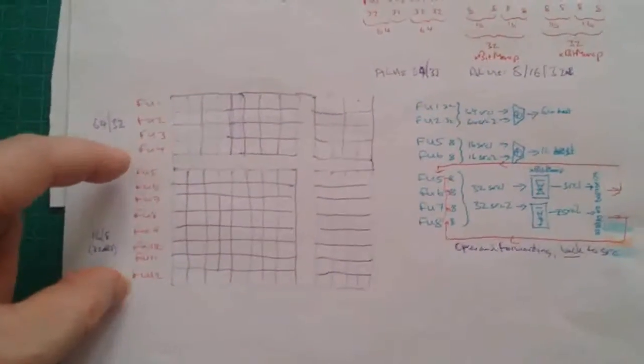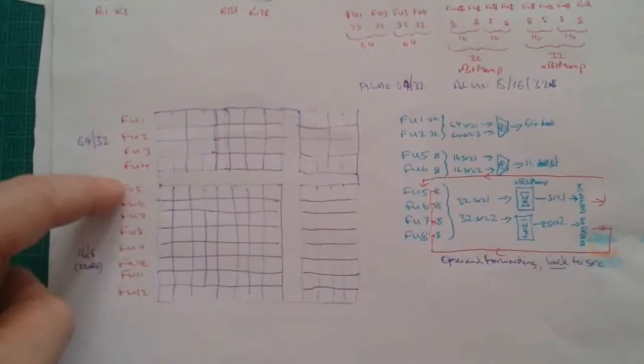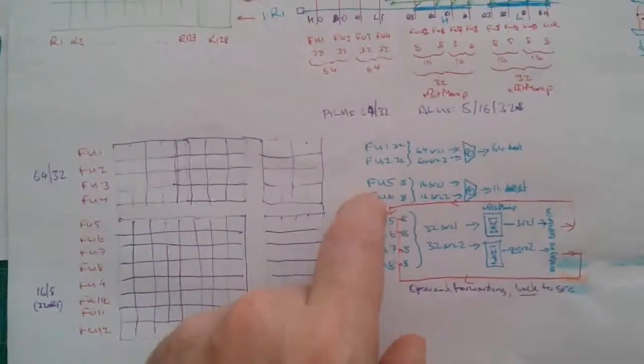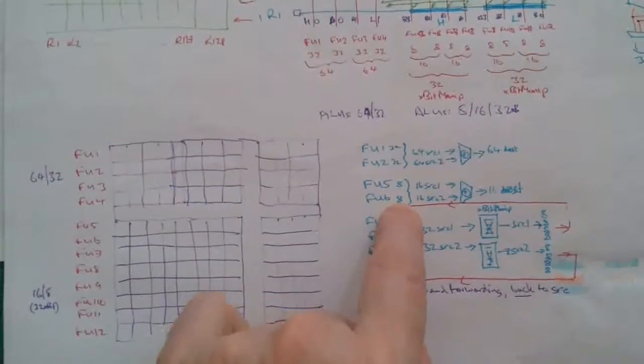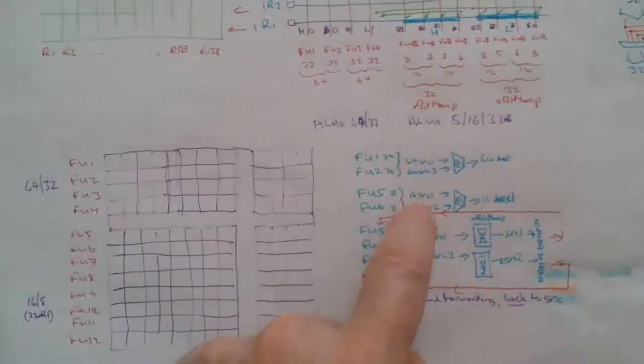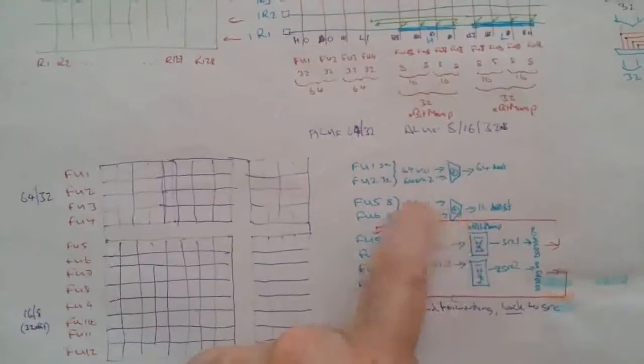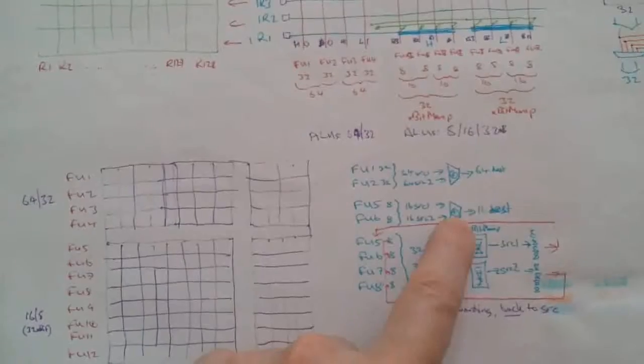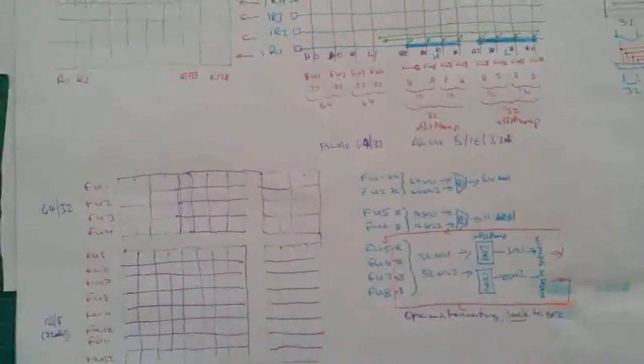Now these are the 8-bit ones, and likewise the pairs group together to give you the 16-bit operations. So function unit 5, which only has 8-bit incoming data, and function unit 6 with 8-bit incoming data are paired together on both the source 1 and the source 2 as input to a 16-bit operation which produces the destination results.